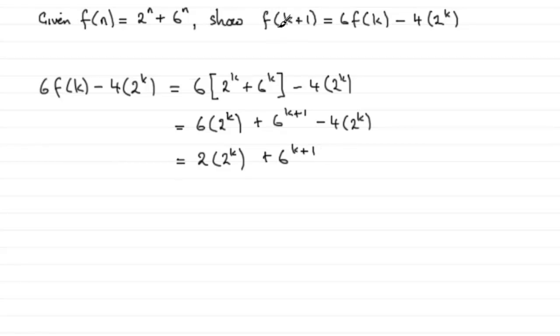Now remember that if I'm to prove that this is f(k+1), in other words, that's going to be 2 to the power of k plus 1 plus 6 to the power of k plus 1. Then you can see I'm almost there. I've got my 6 to the k plus 1. All I need to do is realize that this is 2 to the power of 1 times 2 to the power of k, so I can add the powers. And that gives me 2 to the power of k plus 1 plus 6 to the power of k plus 1, which is the same as doing f(k+1). So I've proved it.